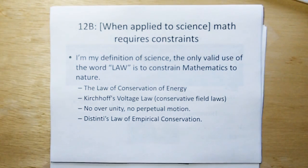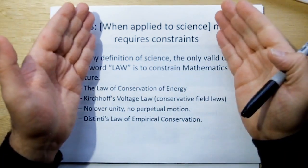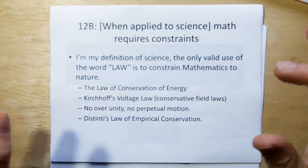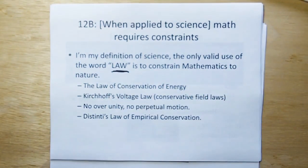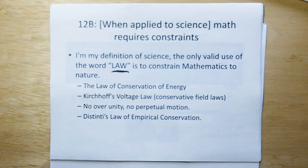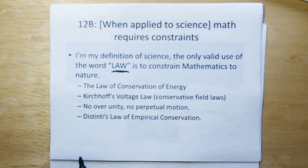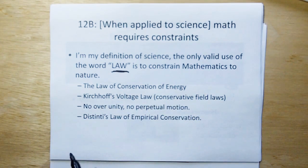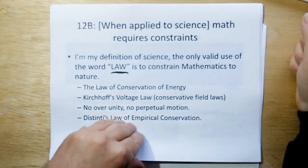And this leads to rule of acquisition 12b. Math requires constraints. And again, we're talking in terms of math applied to science. So in my definition of science, the only valid use of the word law is a rule that constrains mathematics to nature. For example, conservation of energy laws, Kirchhoff's voltage law, which is really a conservative field law, no over-unity, no perpetual motion, and Distinti's law of empirical conservation, which will be described a few pages hence.